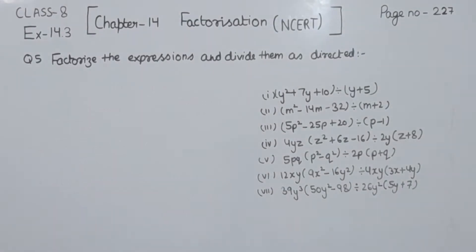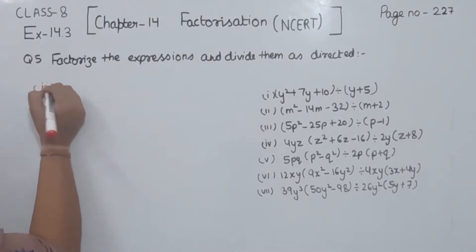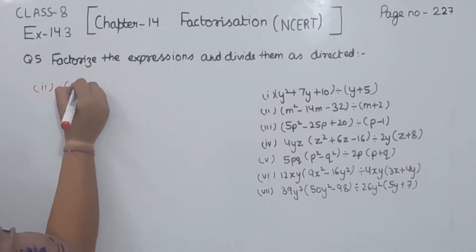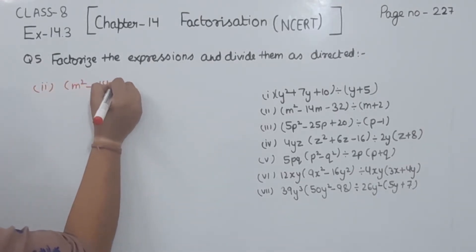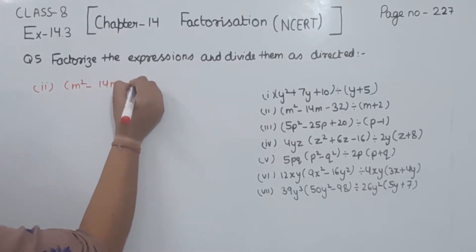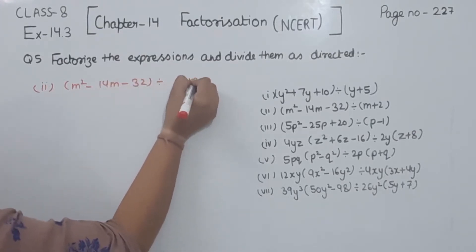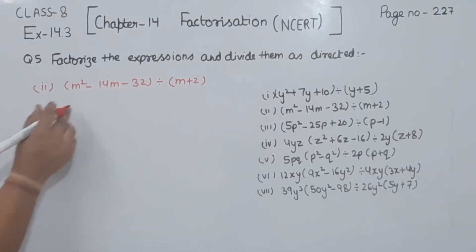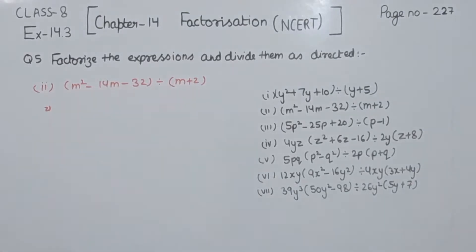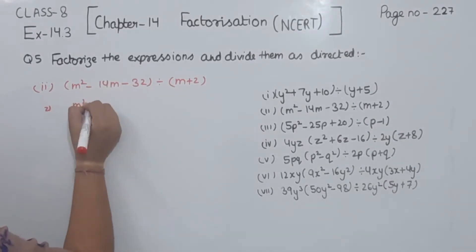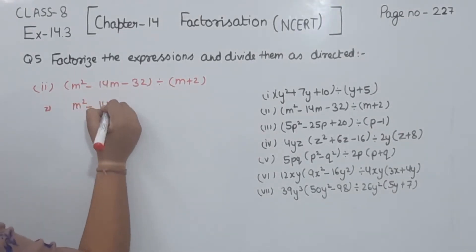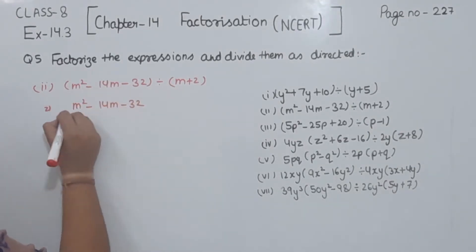Now comes part 2. This one we are having here: m squared minus 14m minus 32 divided by m plus 2. So first of all we are going to factorize the numerator. This one we are having here is m squared minus 14m minus 32.